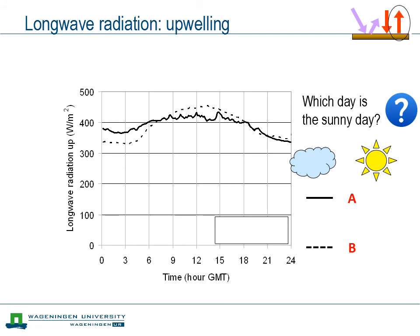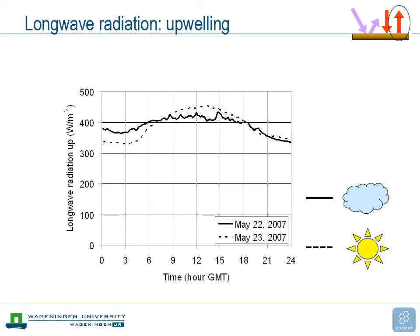Another small exercise: two diurnal cycles show the upwelling longwave radiation — which day is the sunny day, solid line A or dashed line B? Again, the dashed line is the sunny day. The upwelling longwave radiation mainly depends on surface temperature. On a sunny day, the surface heats up considerably during daytime and cools down considerably at night, producing a large diurnal cycle reflected in the dashed line. On a cloudy day, surface temperature is much more even, with far less variation.